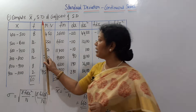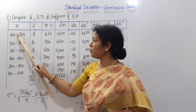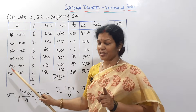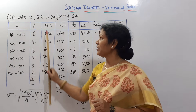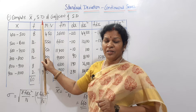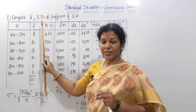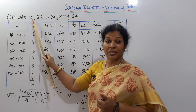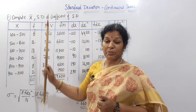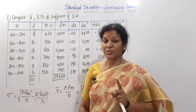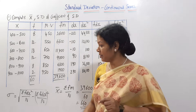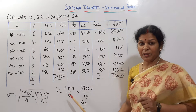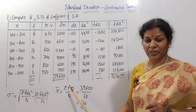What is the data given to us? X is given as class intervals — that means continuous series — and frequency is given. Now, we want x̄. The formula for x̄ is sigma fm by n. So we have to calculate fm first.